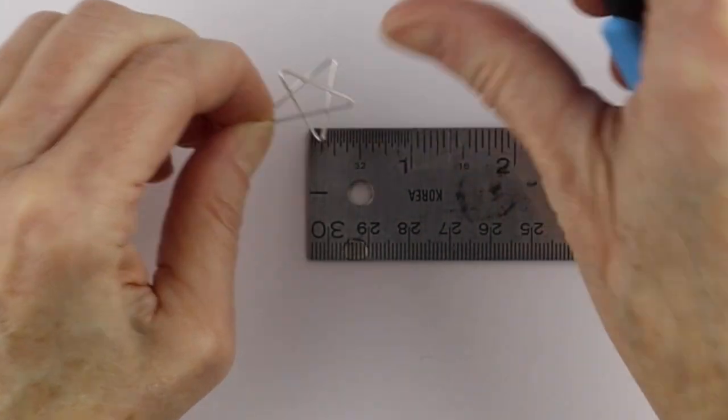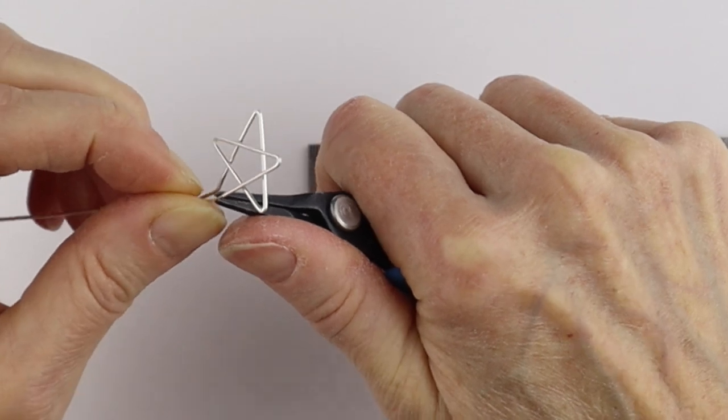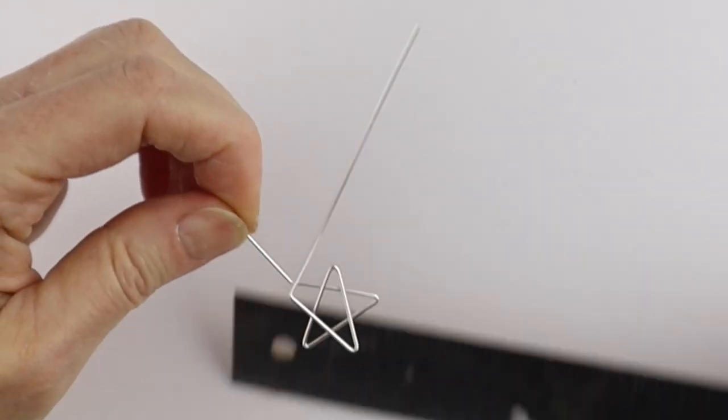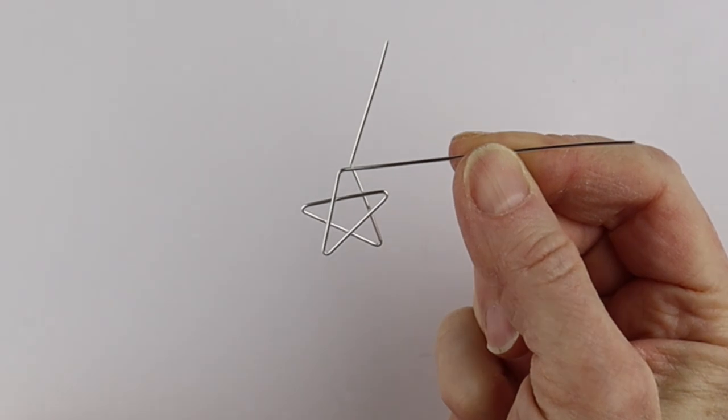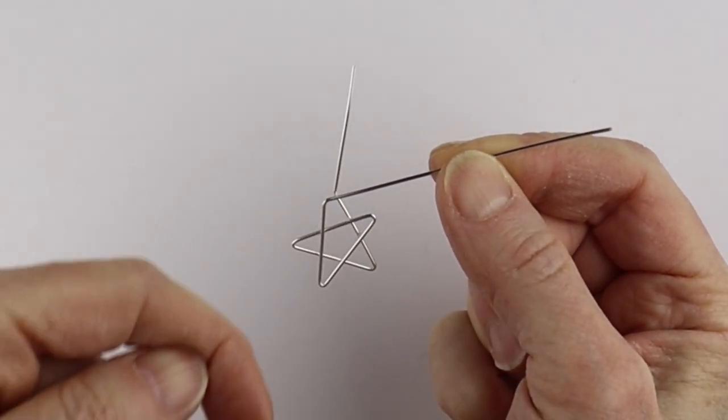So now we have the basic shape and then this wire we want to bend across the front to finish it off. So again, measure 3 quarters of an inch, hold that, push it across. So we can remove the ruler.